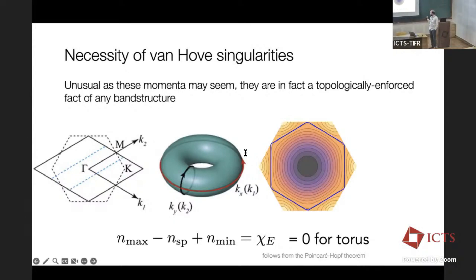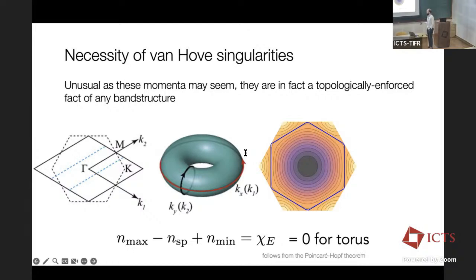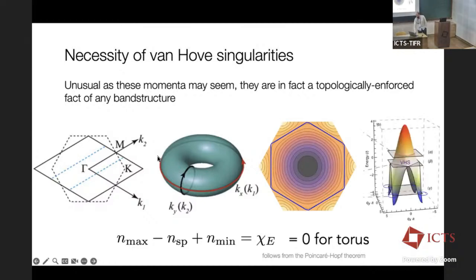In two dimensions, the Brillouin zone is topologically equivalent to a torus. The energy-momentum relation — the dispersion — is a smooth function defined on a torus. There's a theorem from Morse theory which says that for any smooth function on a compact manifold, the sum of maxima and minima minus the number of saddle points must equal the Euler characteristic, which is zero for a torus. This is sometimes called the Poincaré-Hopf theorem. So the number of saddle points must equal the number of maxima and minima, meaning in any two-dimensional dispersion, you will always have Van Hove singularities somewhere — although it's not guaranteed they'll be near the Fermi level.